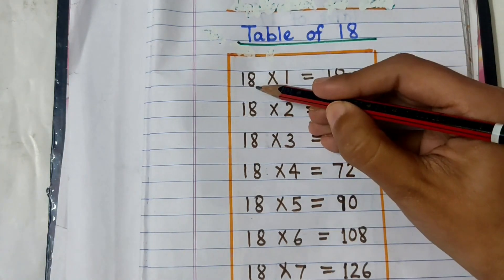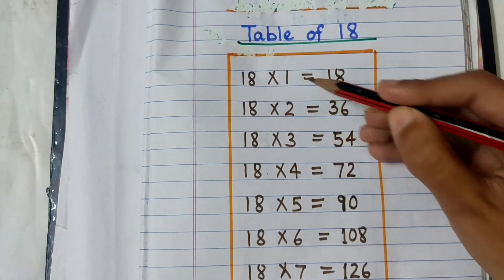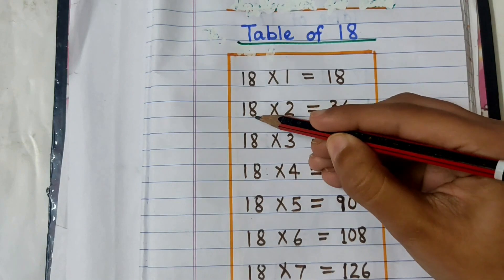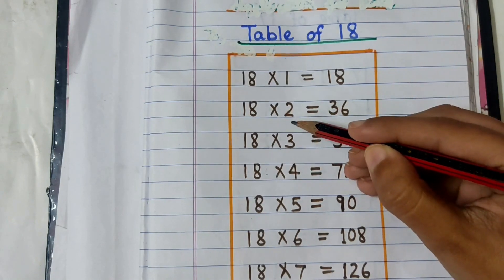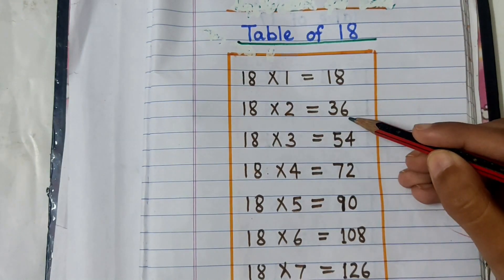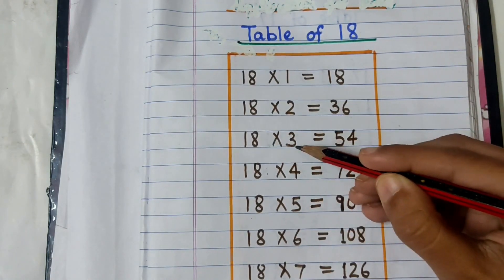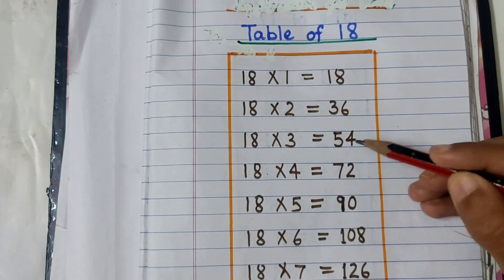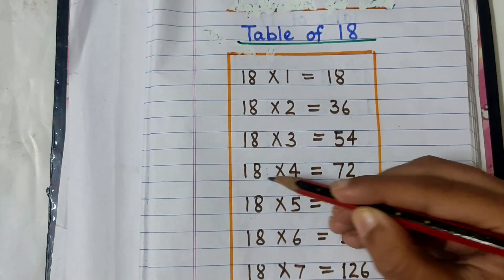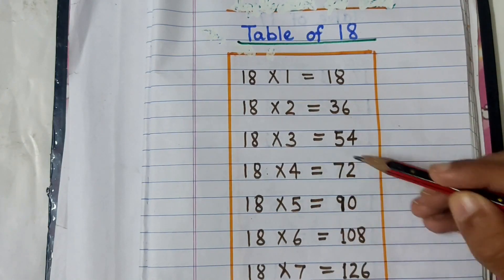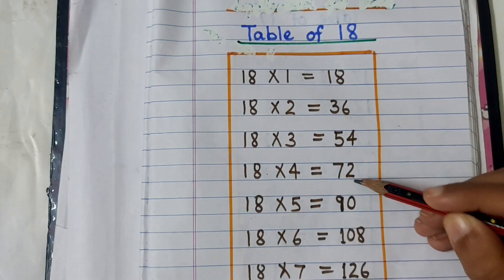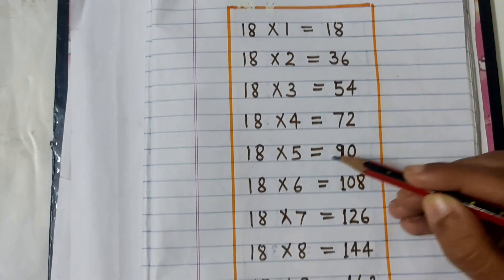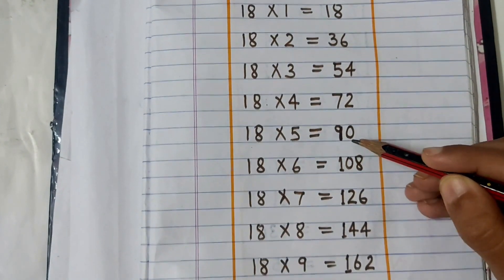18 ones are 18. 18 twos are 36. 18 threes are 54. 18 fours are 72. 18 fives are 90.